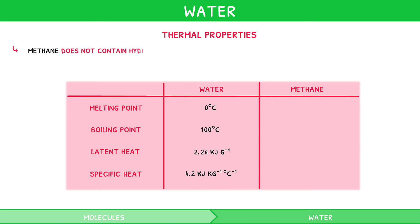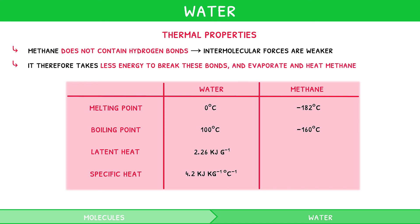Methane does not contain hydrogen bonds, and so the intermolecular forces between the molecules of methane are weaker. It therefore takes less energy to break these bonds, and so methane melts and boils at lower temperatures, of minus 182 and minus 160 degrees respectively. By the same logic, it takes less energy to evaporate and heat methane, so both the latent heat of vaporization and specific heat capacity are lower.